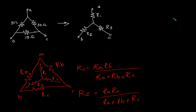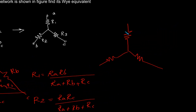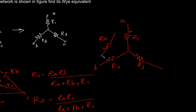Now we will see how we do the opposite conversion, that is from Y to delta. Let's say we have R1 here. To find this arm of the delta, what we are going to do is we have to first take the product of resistances taken two at a time.